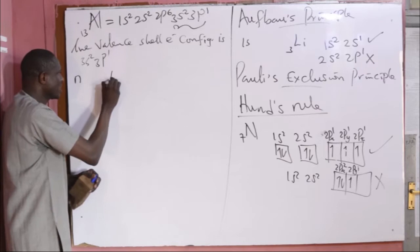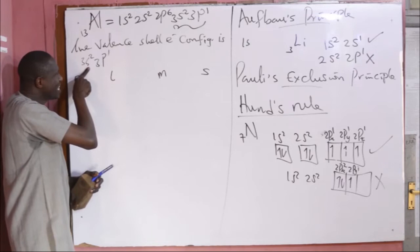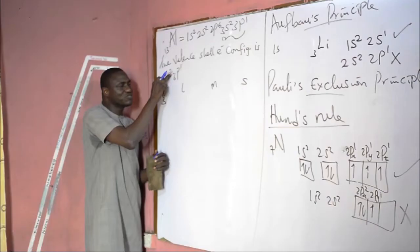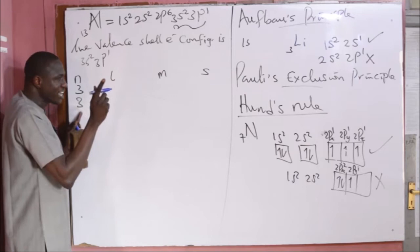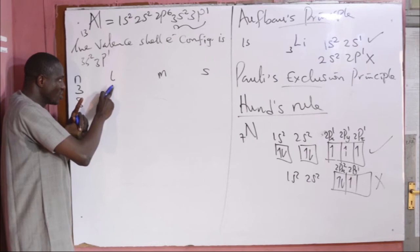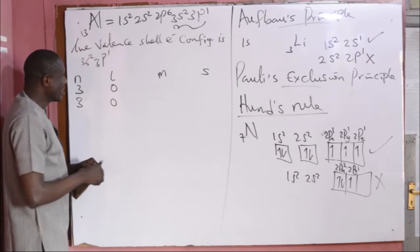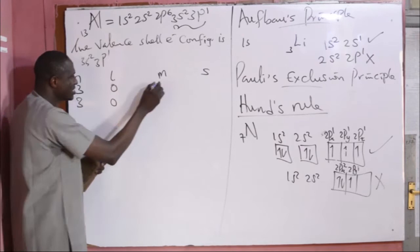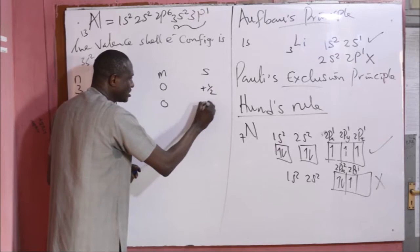To write the possible set of four quantum numbers, indicate the principal (n), azimuthal (l), magnetic (m), and spin (s) quantum numbers. For 3s, the principal quantum number n = 3 for both electrons. Since the subshell is s, l = 0. When l = 0, m = 0. Both electrons are in the same shell, same subshell, same orbital, so they must have opposite spin: one is +½ and the other is −½.